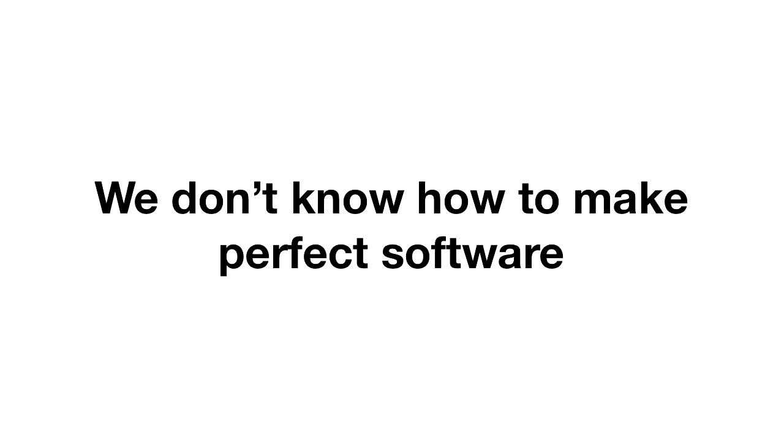But this is one of the fundamental truths of software development: we don't know how to make perfect software. Bugs can and will be deployed to production. People will deploy bugs that increment a counter by two instead of by one. People will deploy services that accidentally initiate denial of service attacks on critical internal infrastructure. People will make operational mistakes like accidentally deleting data. It's not a question of if people will make mistakes, but when and how much.